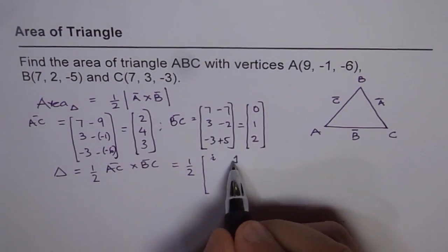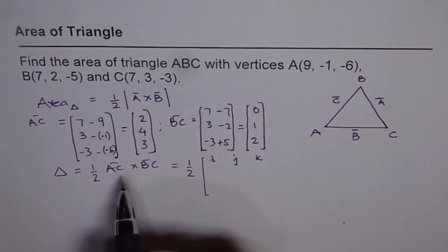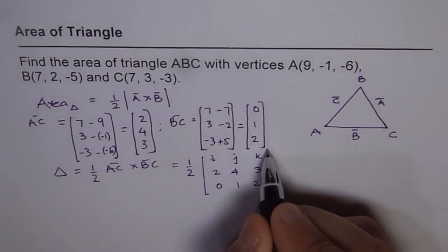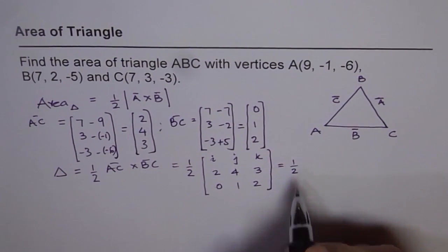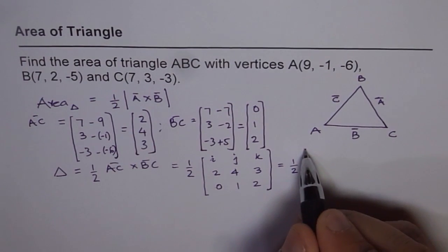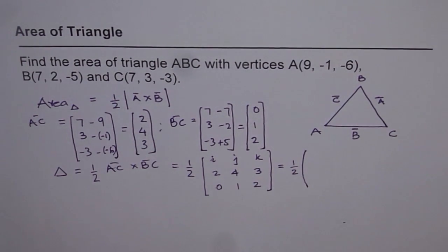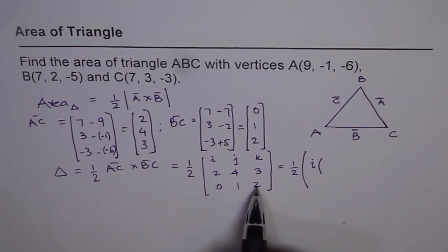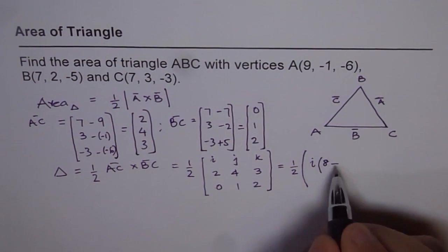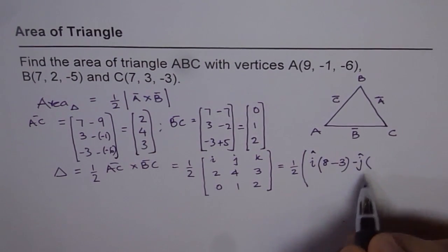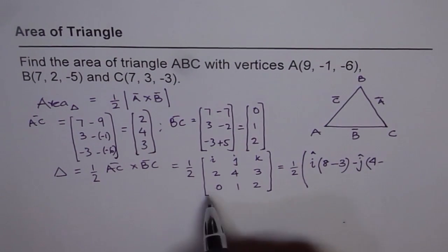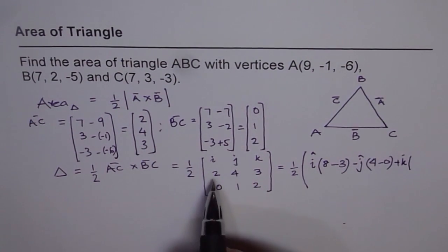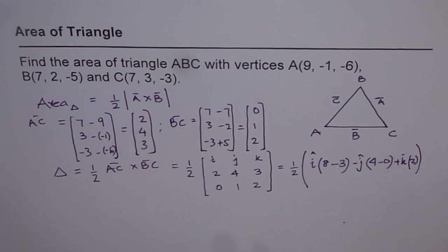So we will write the components I, J, K. So let's say AC is -2, 4, 3, and BC is 0, 1, 2. So it is equal to half of, let me put the brackets here. Now, I component is 4 times 2 = 8, minus 3, minus J, which is 2 times 2 = 4, minus 0, plus K, which is 2, minus 0, so just 2. That's what it is.